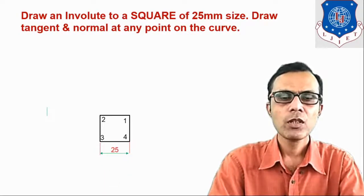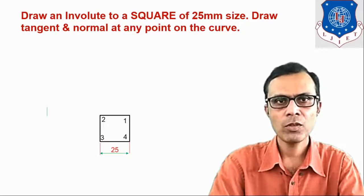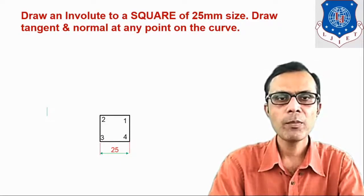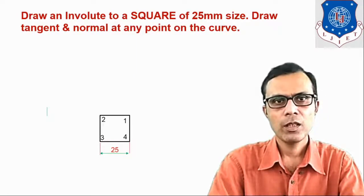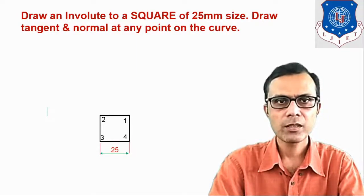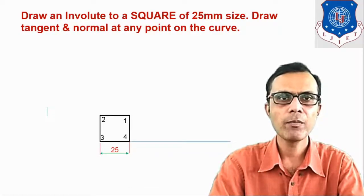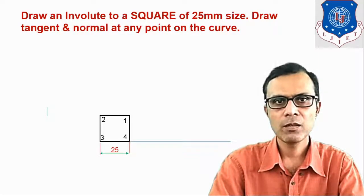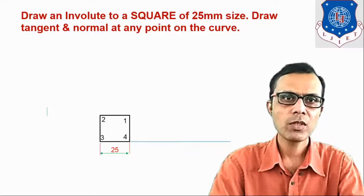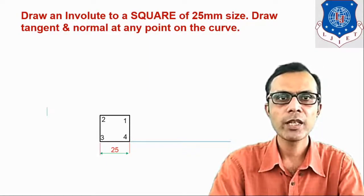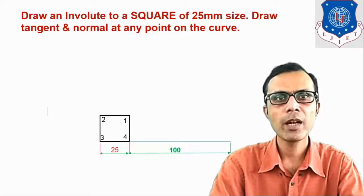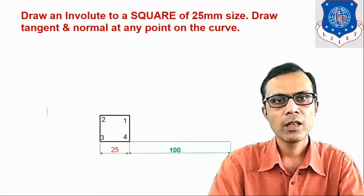Now if we want to wind a string on this square, what will be the length of the string? It will be equal to the perimeter, that is 25 into 4. So the required length of string is 100 mm. From corner number 4, from where we are beginning to wind the string, the length we will take as 100 mm — 25 into 4 means 100 mm total length of string required.